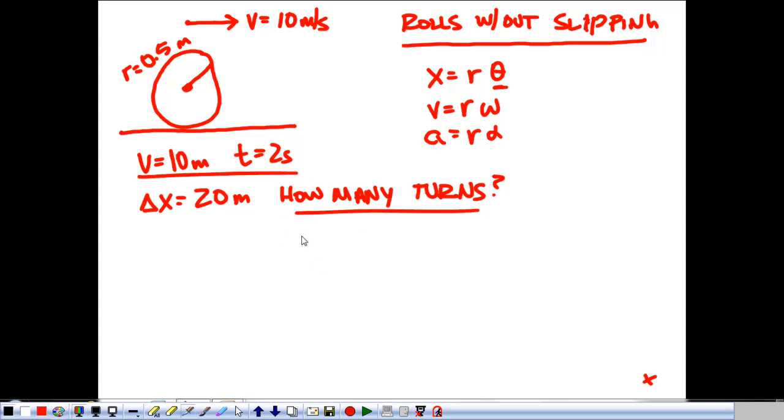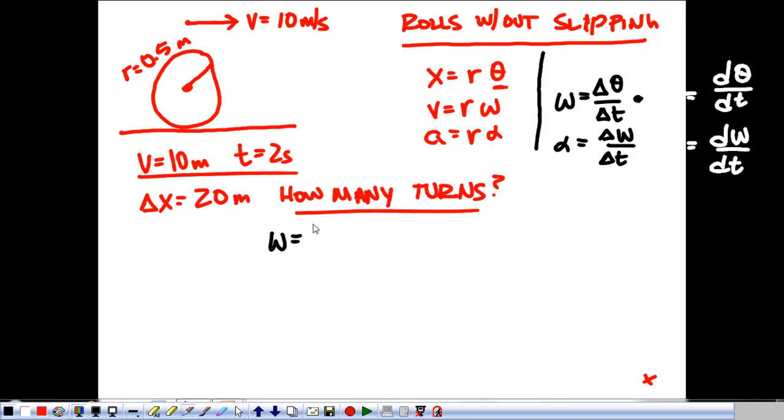So the first way that we're going to look at solving this problem is just by looking at the basic relationships we have between all of these things. So, in addition to saying this, we can also say that omega is equal to delta theta over delta t, and we can say that alpha is equal to delta omega over delta t. And for those of you in calculus, we could say that omega is d theta over dt, and that alpha is the rate of change of omega with respect to time. Either way, those are all fine to do. The first way that we're going to figure out how many turns we have or to figure out our radial quantity is to say that omega, according to this one, is our velocity divided by a radius.